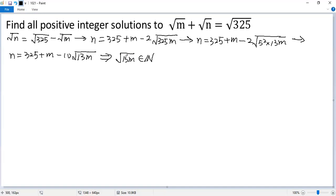And 13 is a prime number. So m must have that form, m equals 13 times a perfect square, say a squared. a is a natural number.